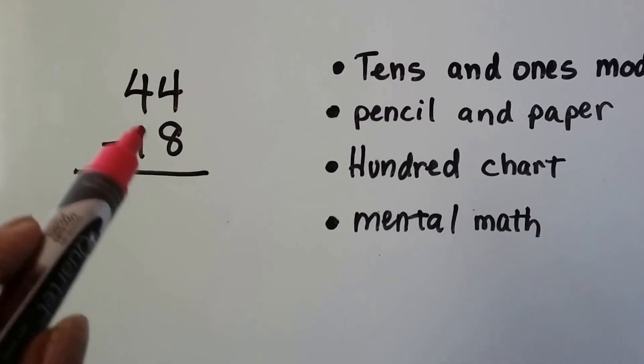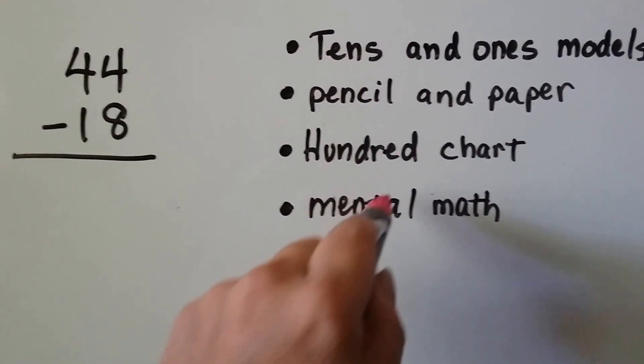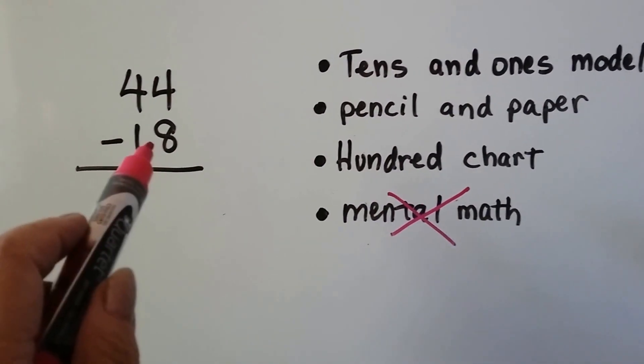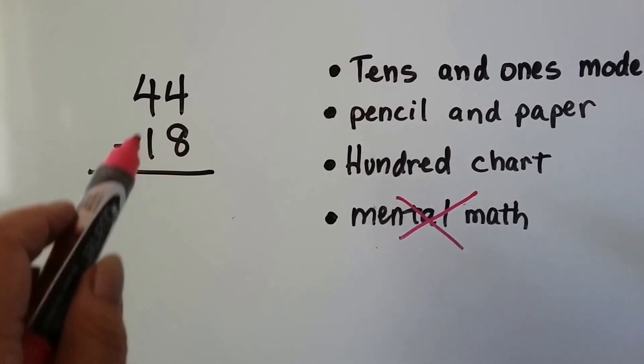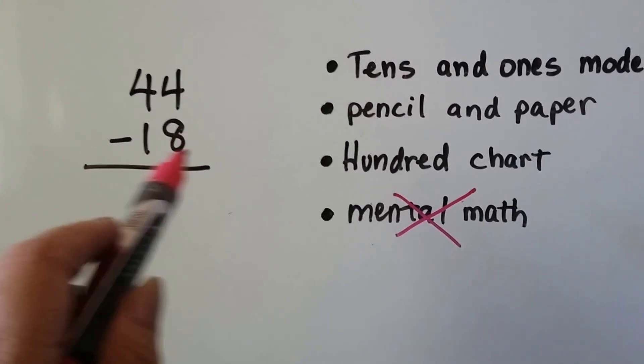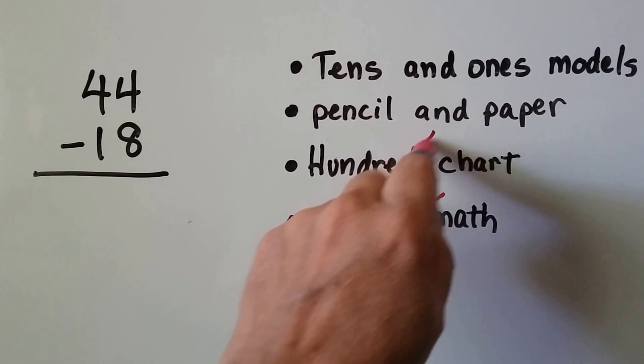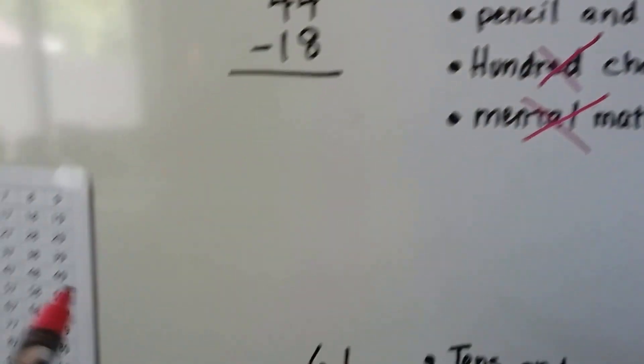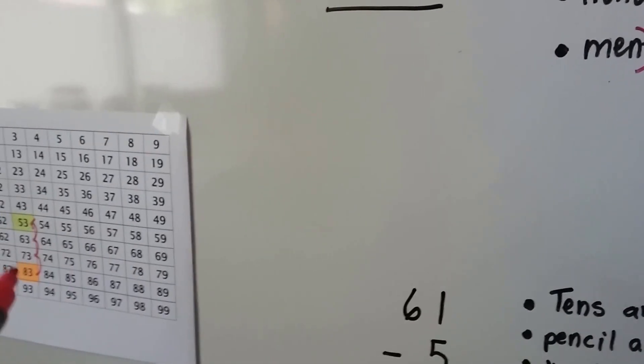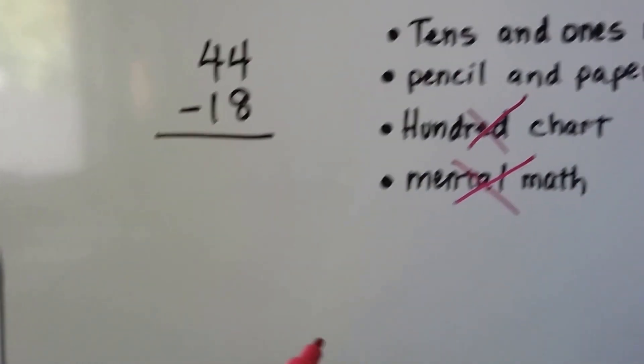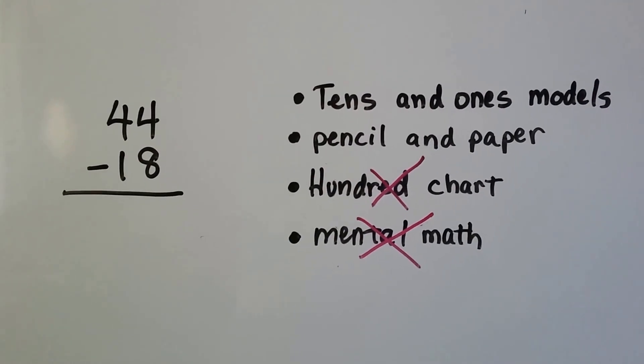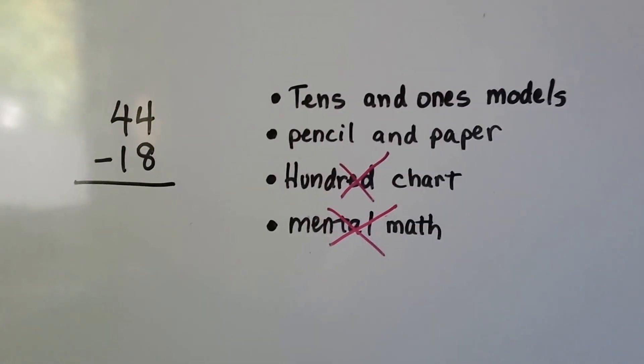This would be a little hard to do mental math. So let's get rid of that one. A hundred chart won't work because we're not taking away an even amount of tens. See, we have one ten and eight ones. So that would be hard to use a hundred chart. We could use it if we started with the number and then counted back squares, but we wouldn't be able to hop rows. We could use a pencil and paper or we could use tens and ones models. So let's use tens and ones models.